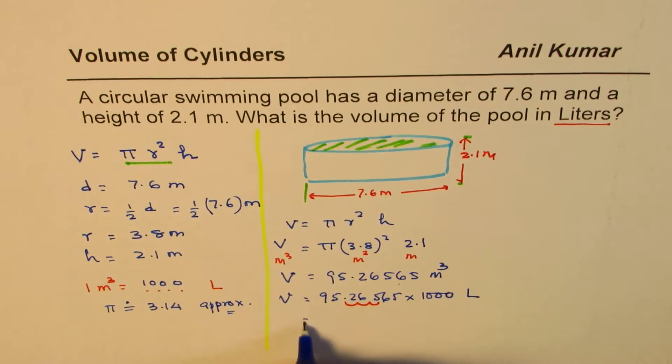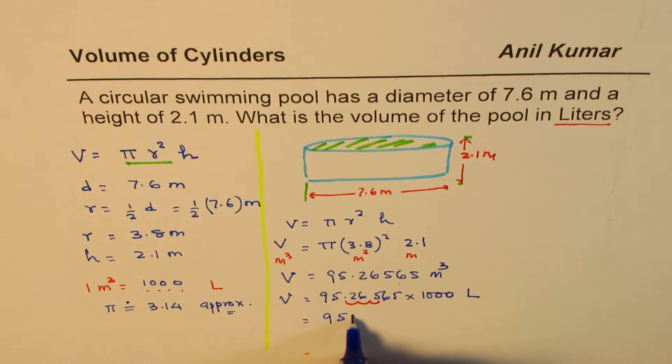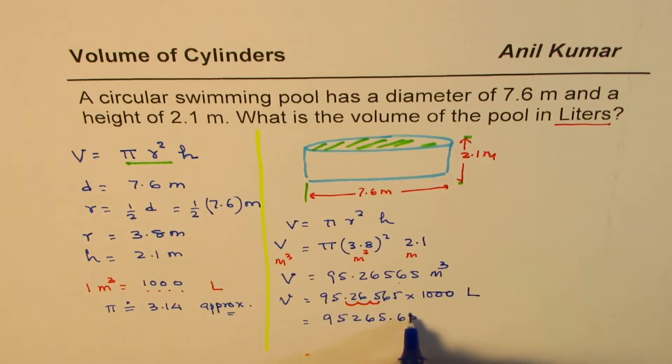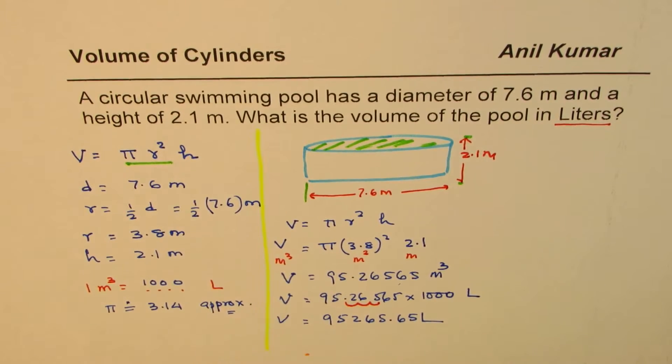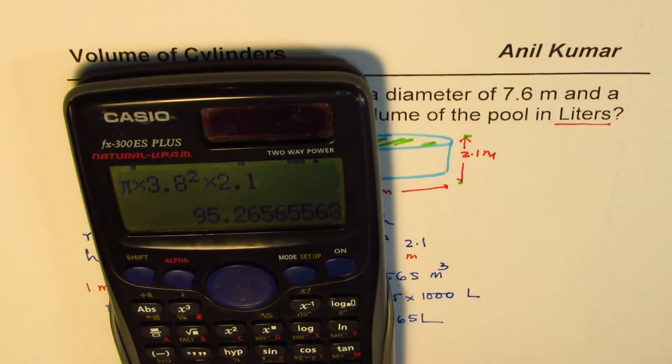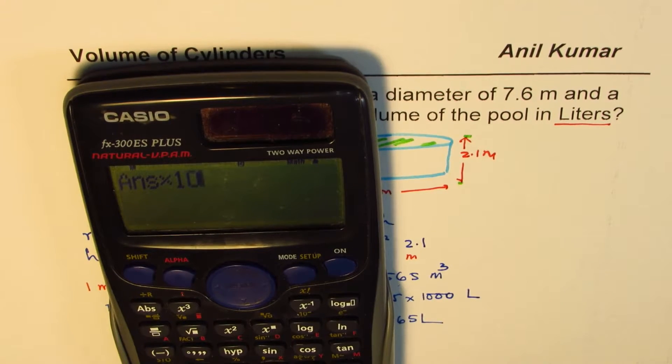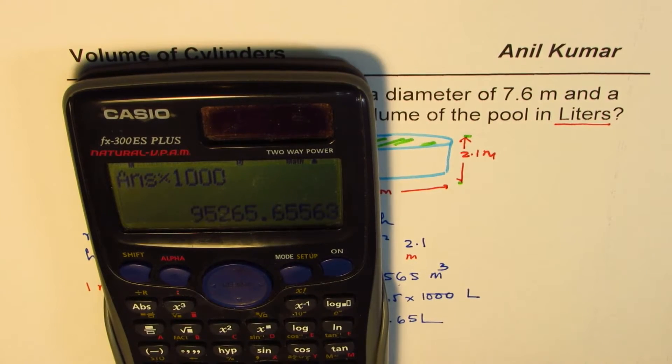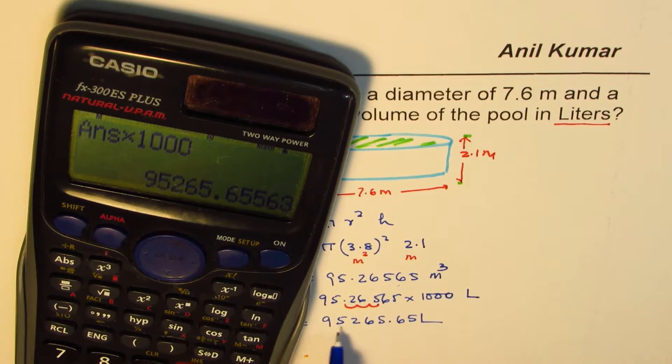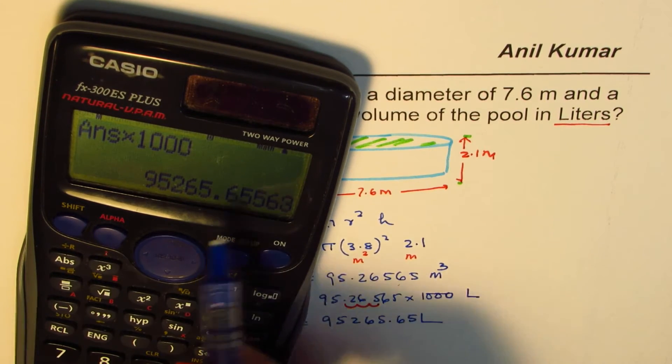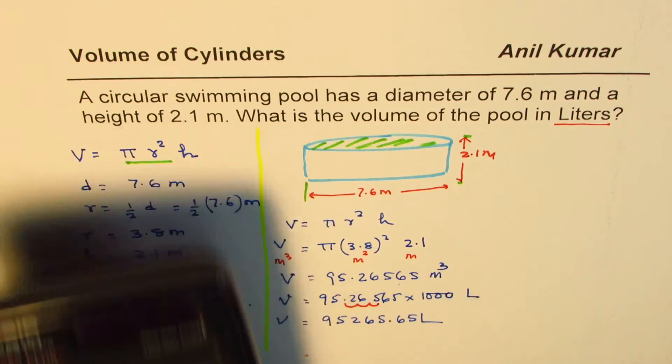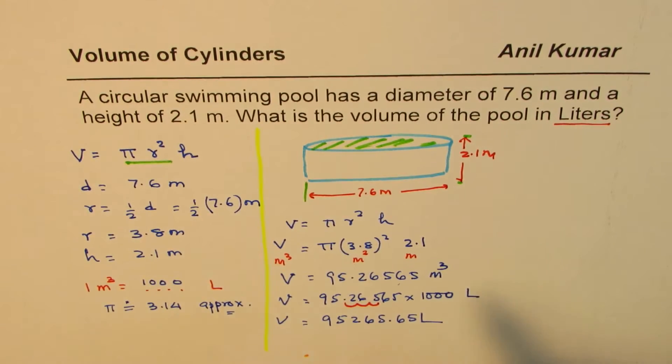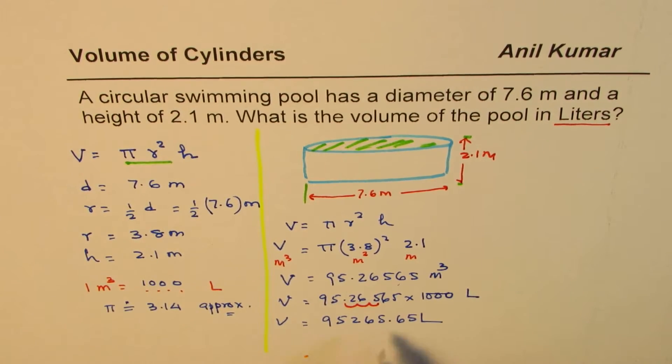Now once you do 1,000, this decimal will move three places, and you'll get your answer which is 95,265.65 liters. Do you see that? So let me show you here. So we have this number multiplied by 1,000, that equals 95,265.65 liters.